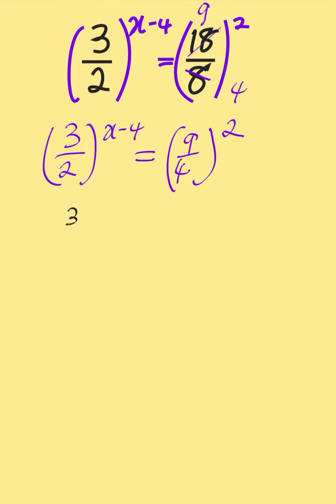From here, we rewrite: 3 over 2 to the power of x minus 4 equals 9, which is 3 squared, over 4, which is 2 squared, all to the power of 2.